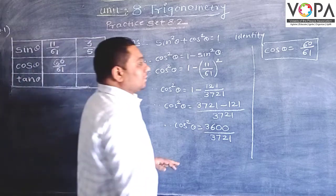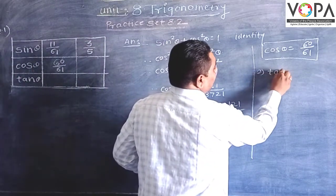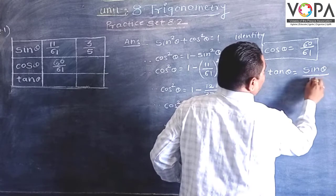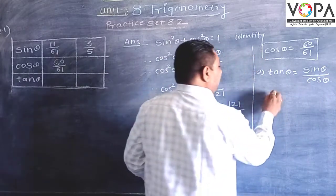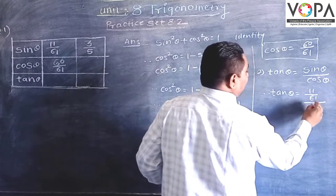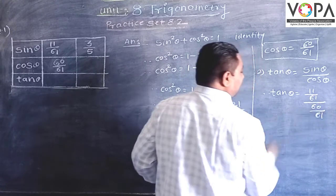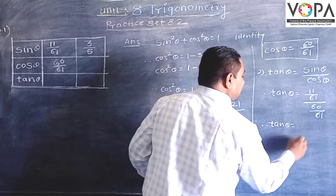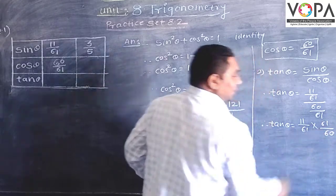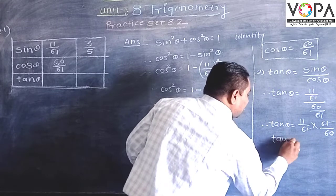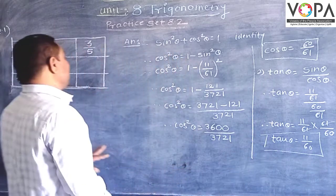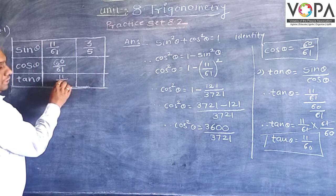Now, to find the value of tan theta. We know that tan theta is sin theta upon cos theta. Therefore, tan theta is equal to the value of sin theta, which is 11 upon 61, divided by cos theta, which is 60 upon 61. So, tan theta is equal to 11 upon 61 multiplied by 61 upon 60. The 61s cancel, giving the value of tan theta as 11 upon 60.